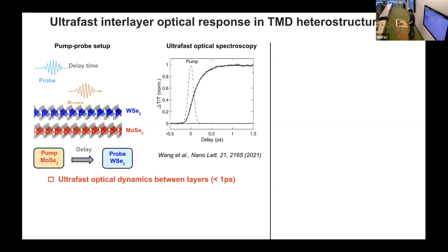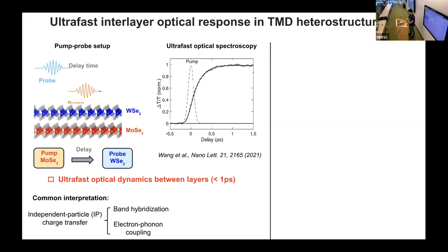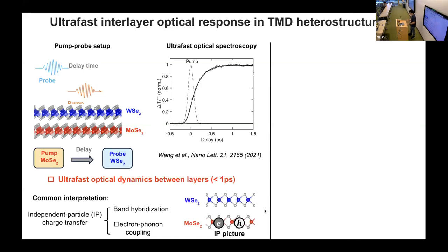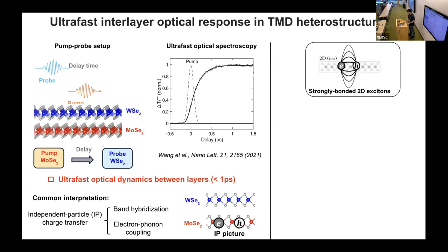Experimentalists have found that this dynamics between the two layers is very fast — less than one picosecond. A common explanation is based on the so-called independent particle picture: we pump one layer such as the Molybdenum Diselenide layer, create an electron-hole pair, and these free carriers move from one layer to another, giving us this dynamic. But this picture is conceptually insufficient.